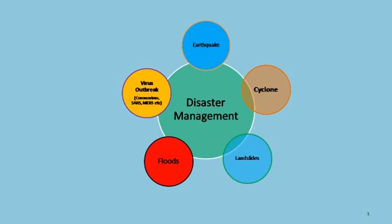Today I wish to explain about disaster and its management. A disaster is any sudden event that is caused by nature or man, which adversely affects the human population, animals, and plants. Disasters are of various types: earthquakes, cyclones, landslides, floods, and virus outbreaks like coronavirus, SARS virus, and MERS virus.